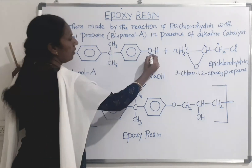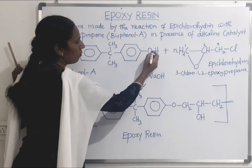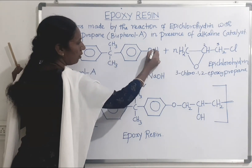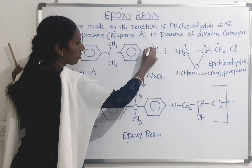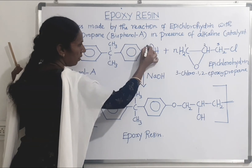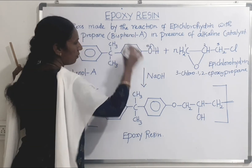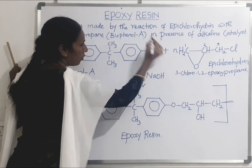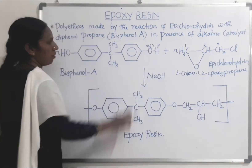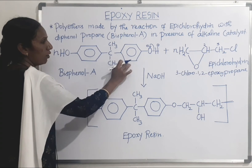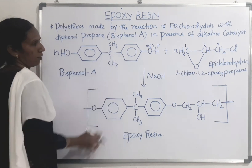This is the hydroxy group. This bond shifts to this oxygen, so this oxygen gets the negative charge and this hydrogen gets the positive charge. So this is the oxide ion — this is the phenoxy group.